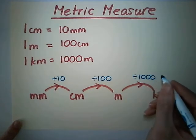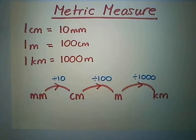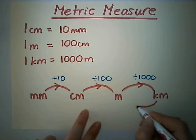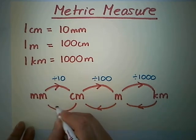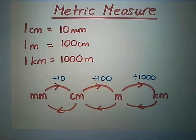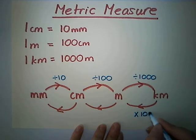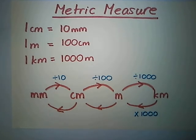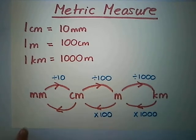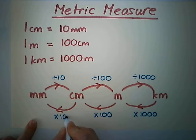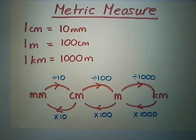If I want to go the other direction, I will multiply. I'll multiply by 1000 when changing from kilometers into meters, then multiply by 100 when changing from meters into centimeters, and then multiply by 10 when converting between centimeters and millimeters.